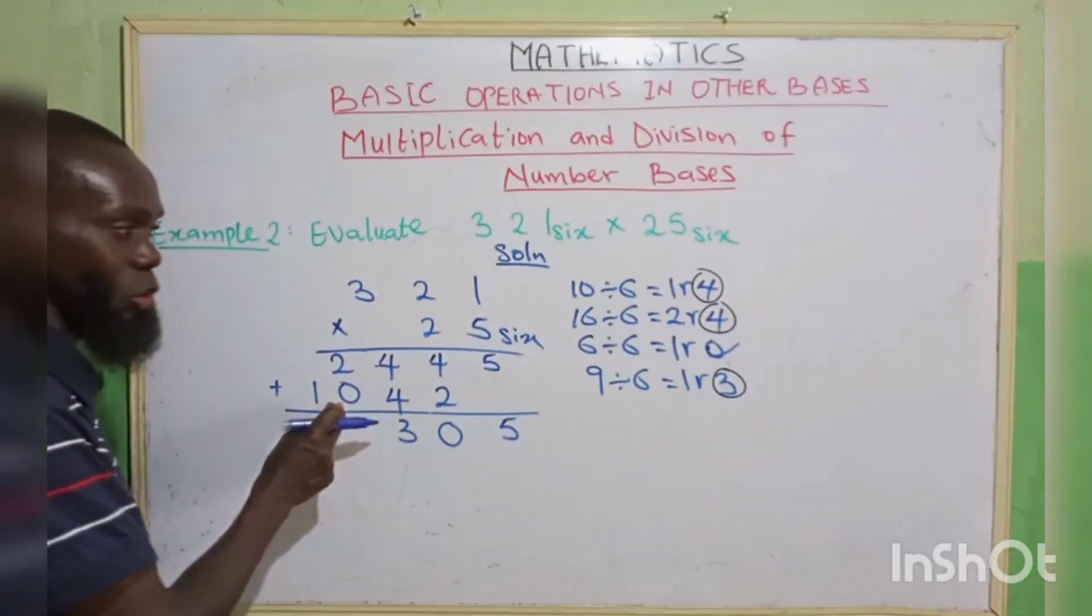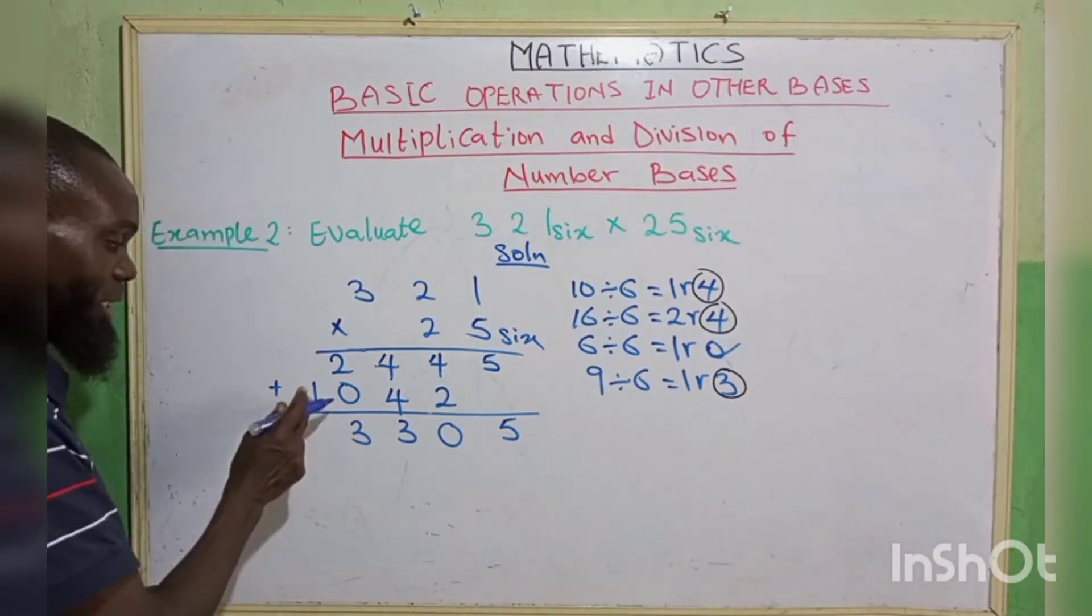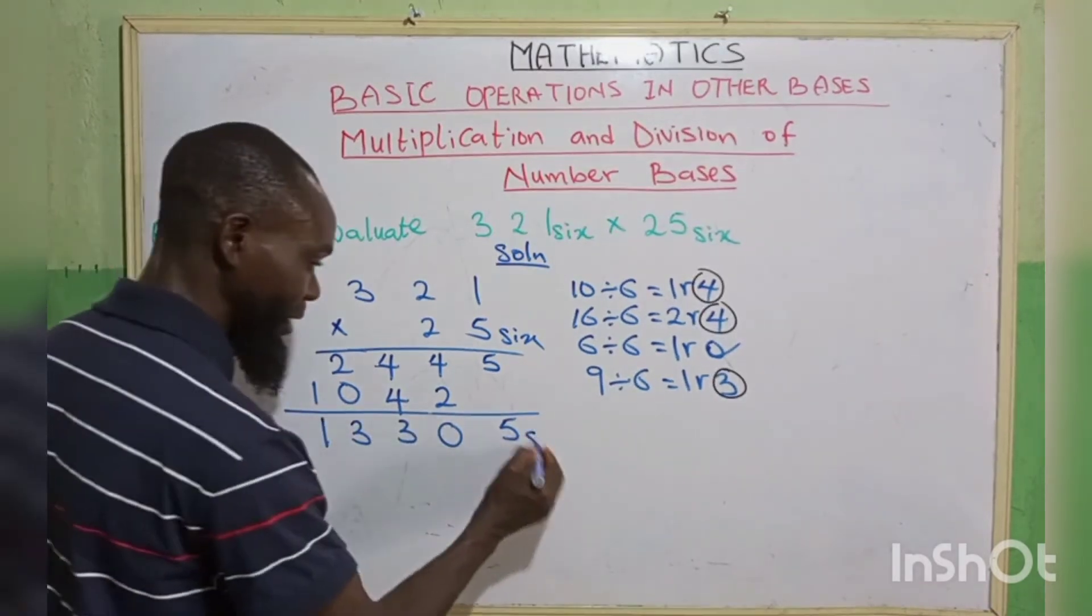2 plus 0, that is 2 plus 1 we've carried, that is 3. 3 is not up to 6, you write your 3. So this 1, take it down in base 6.